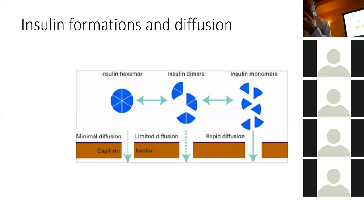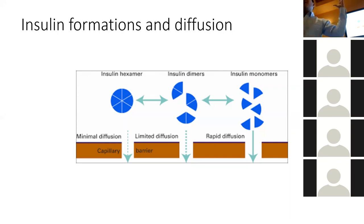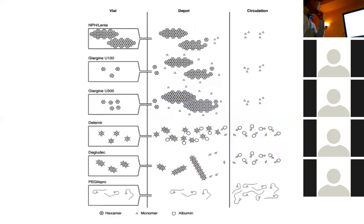By altering the amino acid structure, you can change how insulin works. For Lantus, they put in different amino acids that form hooks with one another so the hexamer lasts longer. For rapid-acting insulins like NovoRapid and Apidra, they removed the amino acid sequence that makes them clump together, so they dissolve into monomers faster, get into your blood faster, and have a faster duration of action. NPH forms random clusters while Lantus forms more stable and regular clusters.